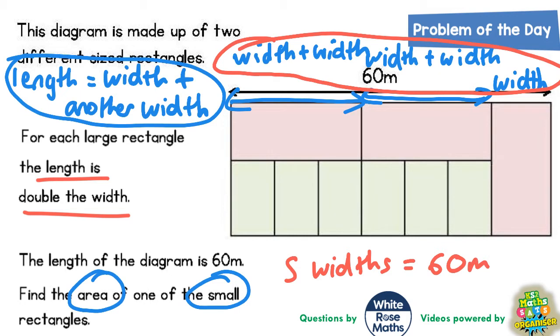So if five widths are equal to 60, one width must be whatever 60 is divided by 5. Well 60 divided by 5 is 12 metres. So one width must be worth 12.